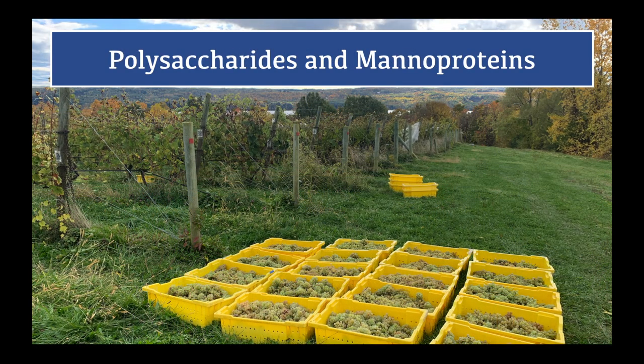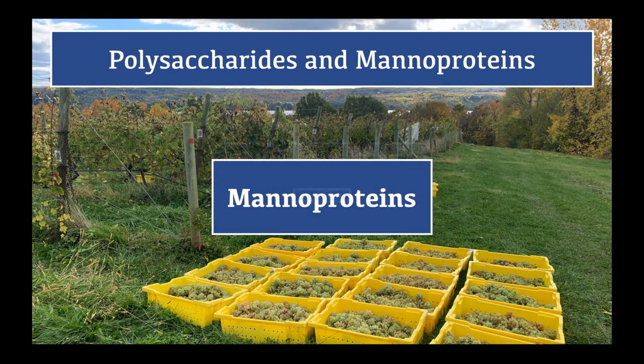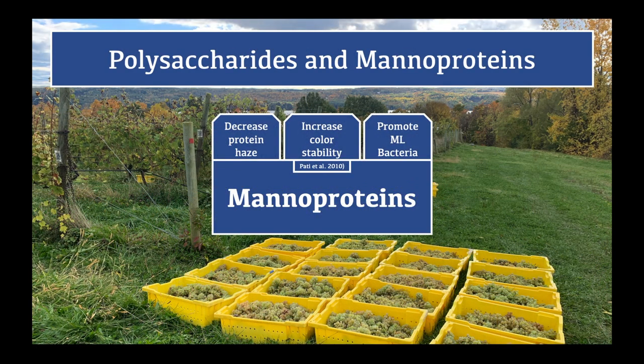After autolysis, manoproteins and mannins are some of the main compounds released by yeast cells as they break down. Manoproteins have been pretty thoroughly studied, and they have been noted to decrease protein haze in white wine, increase color stability, and promote growth of malolactic bacteria, which is perfect since aging on lees mostly occurs with white wines.